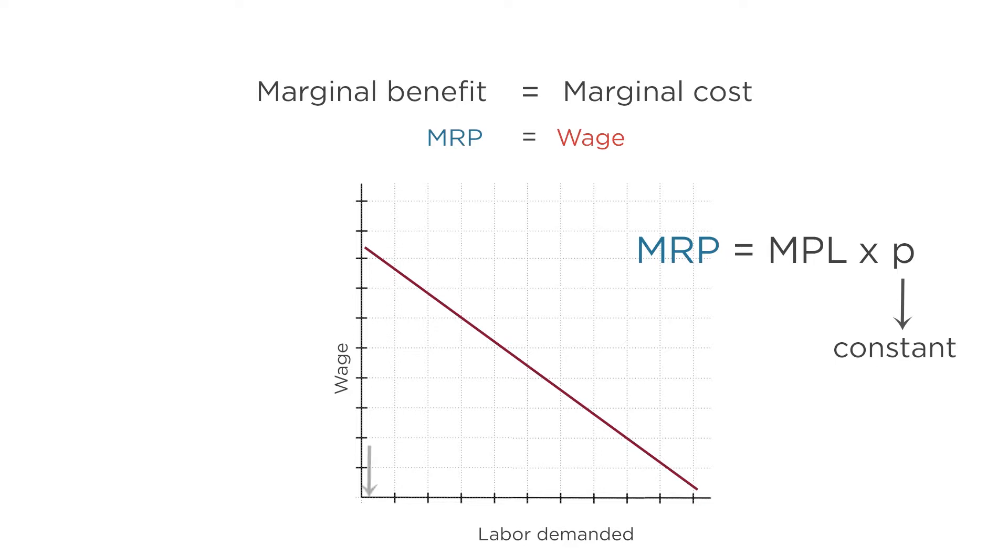The price of goods is constant, so that doesn't change. What changes is the marginal product of labor. As we discussed earlier, as the firm hires more and more labor, the marginal product of labor is diminishing. The first worker is really valuable. She has a high marginal product and therefore a high marginal revenue product. But as the firm hires more and more workers with capital fixed, their marginal product falls.